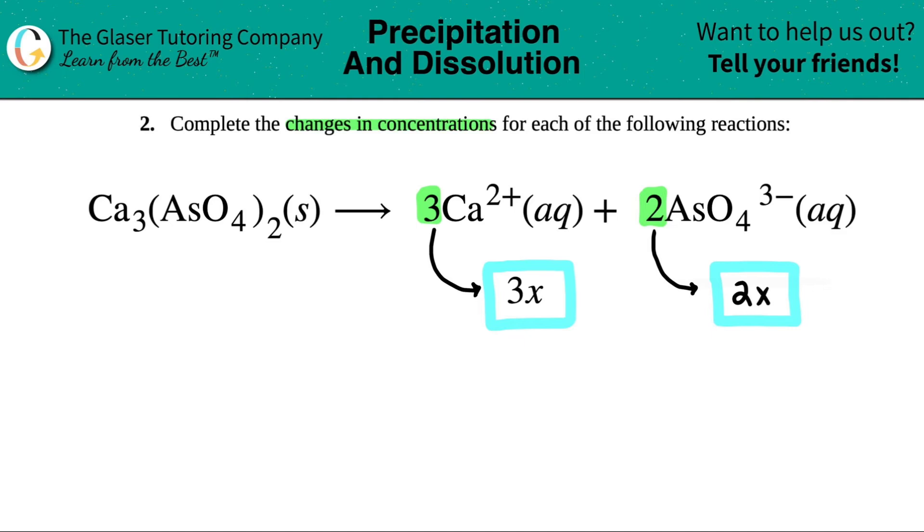It's just as simple as looking at your coefficients and writing that the change is whatever that change is. This is going to be 3 times that and this would be 2 times that. So this would actually change more because the coefficient number is bigger than the AsO4^3- minus.